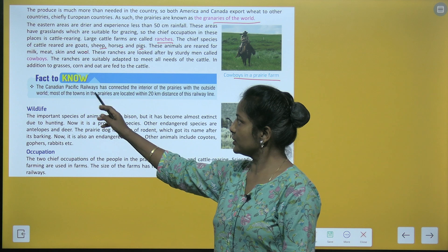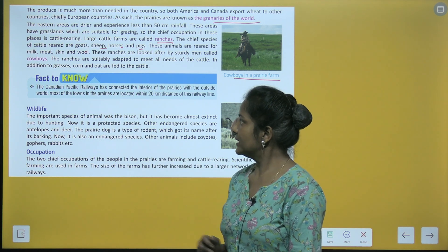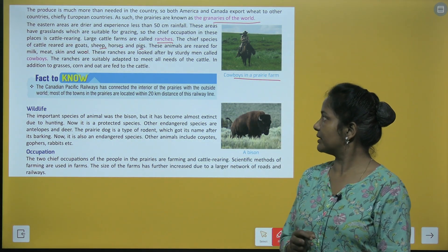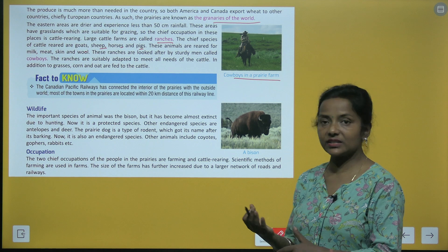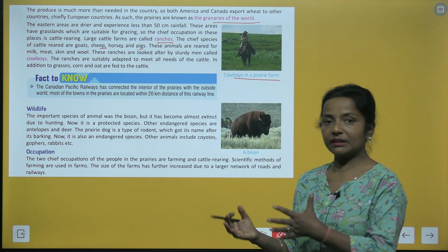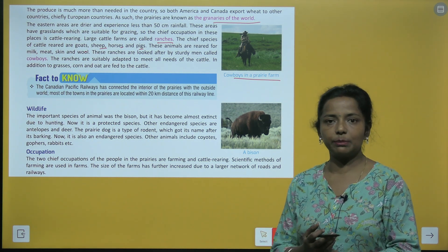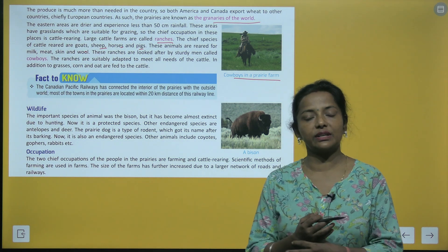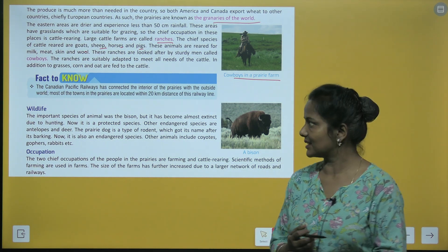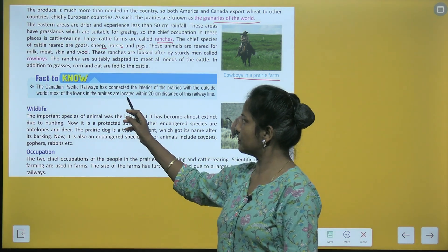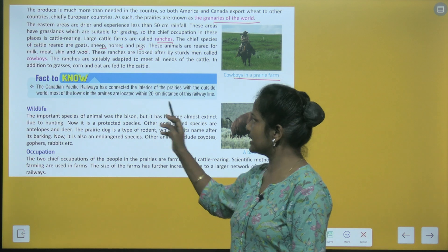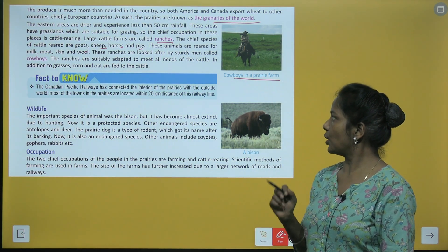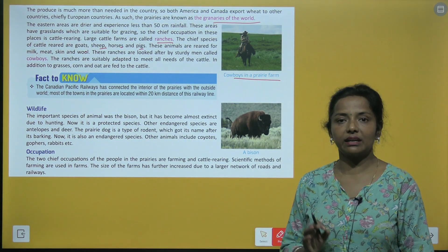Fact to know: the Canadian Pacific Railways has connected the interior of the prairies with the outside world. Most of the towns in the prairies are located within 20 kilometers distance of this railway line.